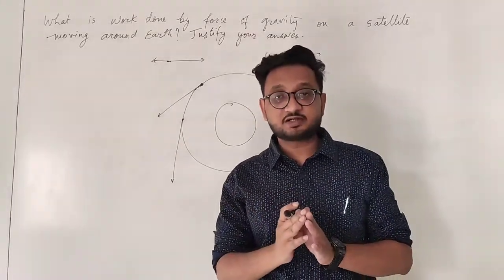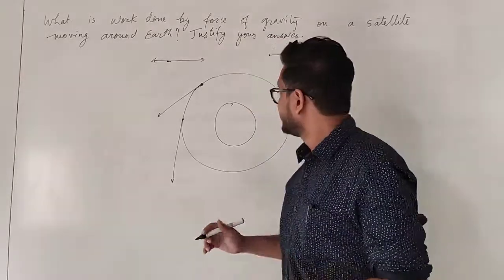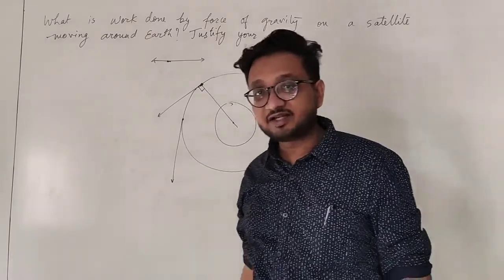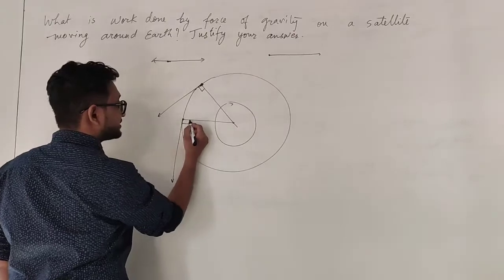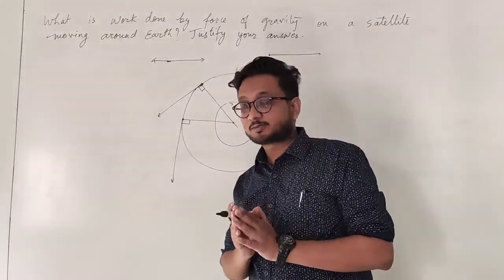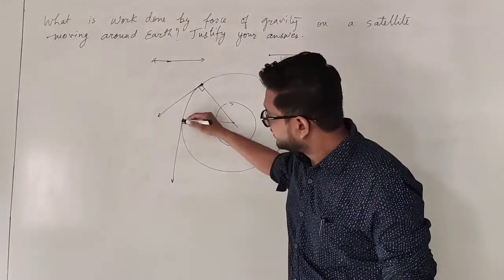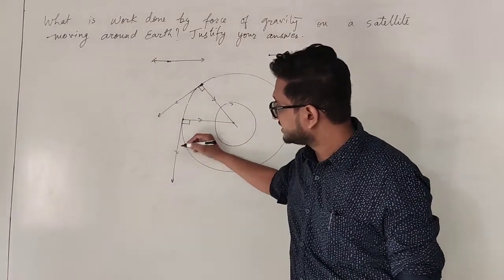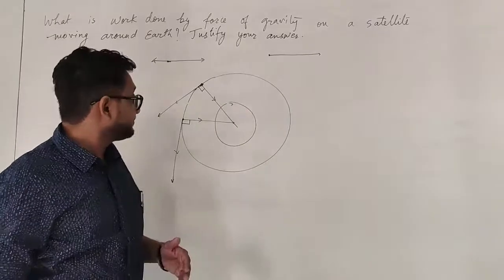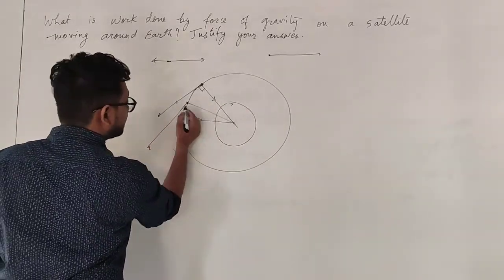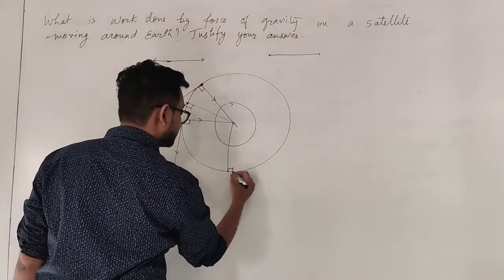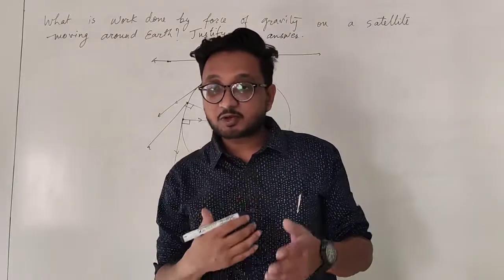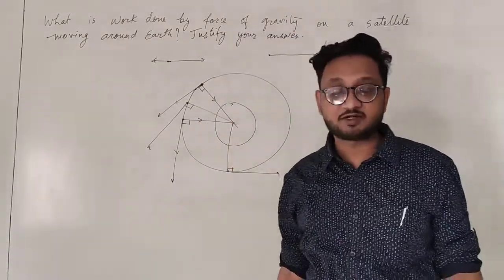The satellite is moving in circular motion, and therefore its velocity is changing direction continuously. But at every point, if you observe from the center of the Earth, the velocity and the gravitational force always make a 90-degree angle. The gravitational force acts toward the center, while the velocity of the satellite at every point is perpendicular to the gravitational force.